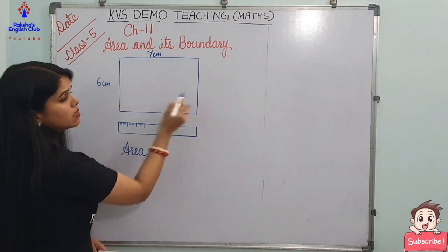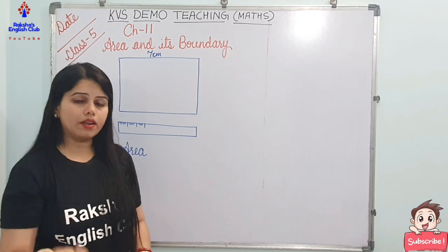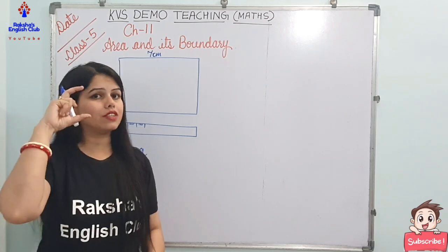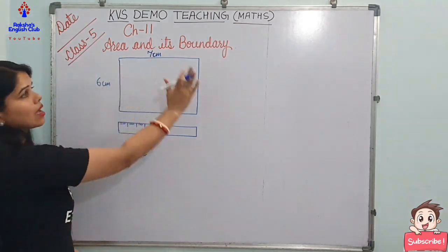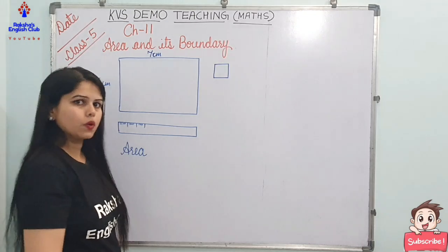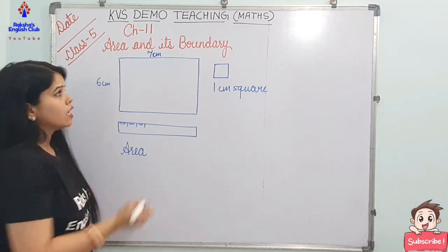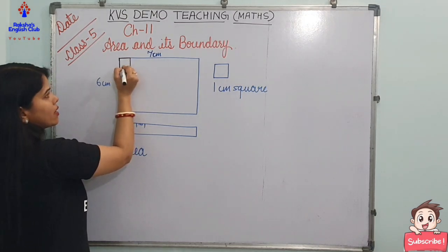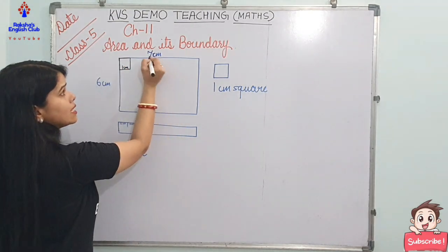How am I going to measure the area? I only have the length and breadth of this rectangle. For measuring the area of rectangle, I have this piece of paper. Do you want to see the magic? With this small square piece of paper, I can measure the area of rectangle. This small piece of paper is of square shape and it is one centimeter square. So if I am keeping my one square here — this is my square of one centimeter.